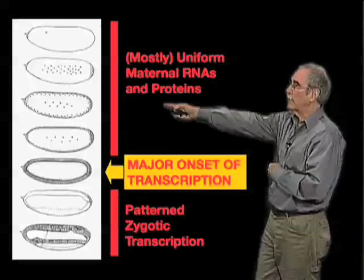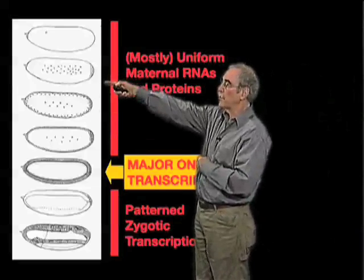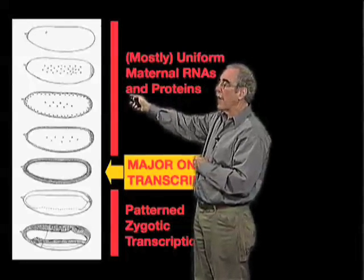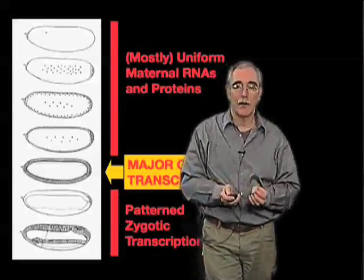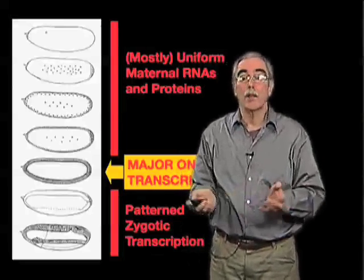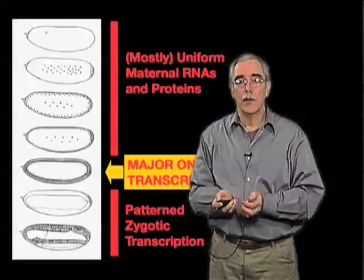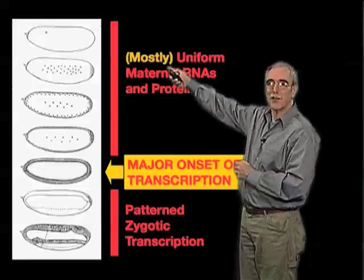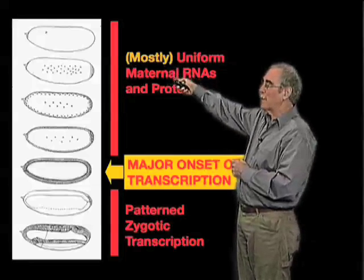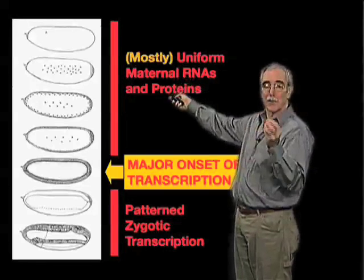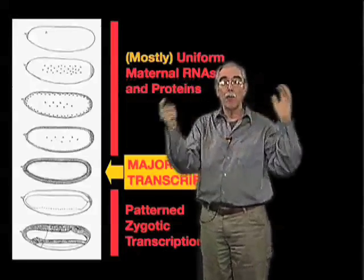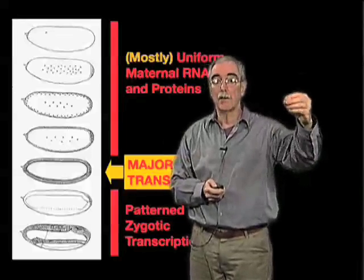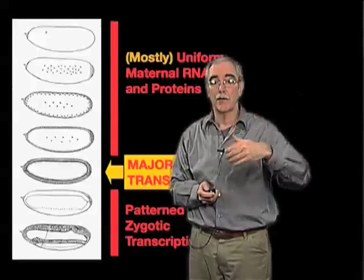Before that stage, cell behaviors were uniform, and maternal RNAs and proteins — which the early embryo depends on — were for a long time thought to be uniformly distributed throughout the egg. But what we've learned is that we have to put the emphasis on 'mostly.' Most maternal RNAs and proteins are uniform, but a very small number show distinct patterns of distribution.